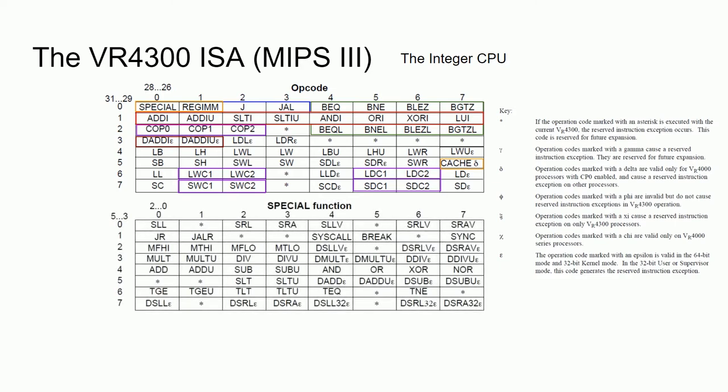Now let's look at the special instruction code, which is used for all register type instructions. These are encoded in the functional field of the R-type instruction. We have two or more jump instructions where they jump to an address stored in a register. There are 24 32-bit ALU instructions to do shifts, additions, subtractions, logical operations, comparisons, multiplication, and division. There are 17 64-bit ALU instructions which do the same as their 32-bit counterparts. One special instruction generates a software interrupt, allowing programs to send requests to an operating system. The rest are either unimplemented or debugging instructions. Note that a division by zero exception is usually implemented using a trap instruction, which falls under the category of a debug instruction.